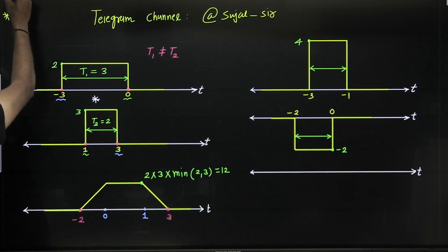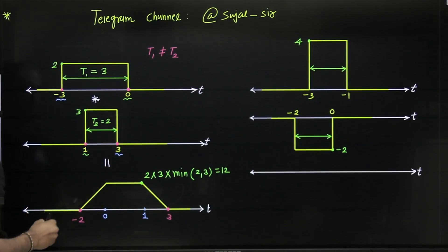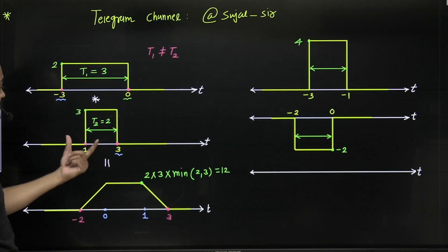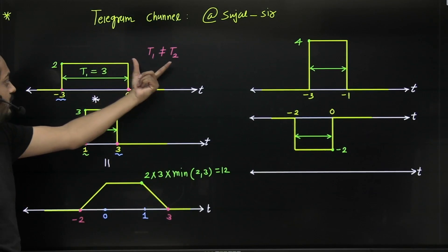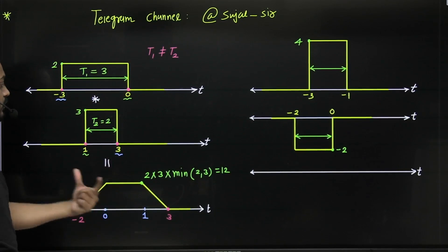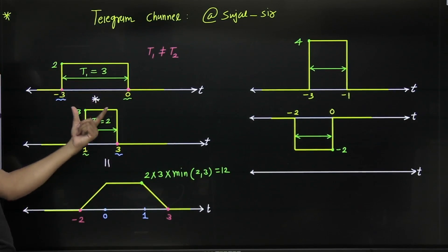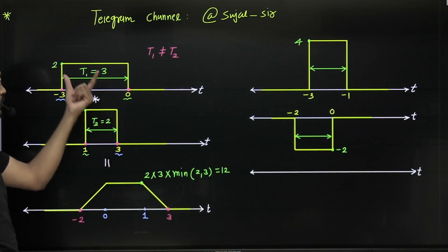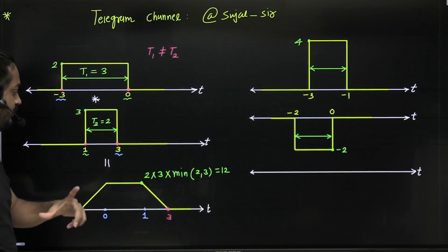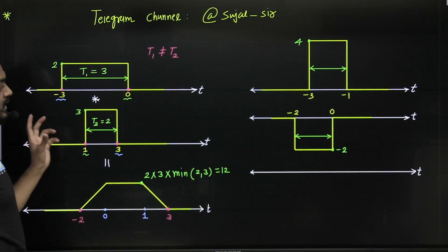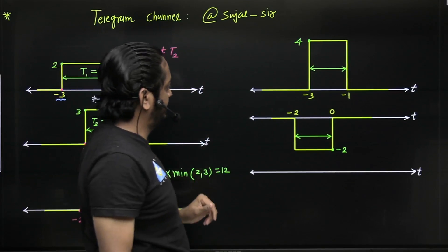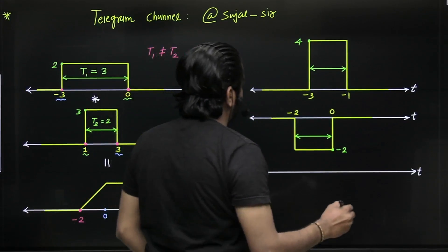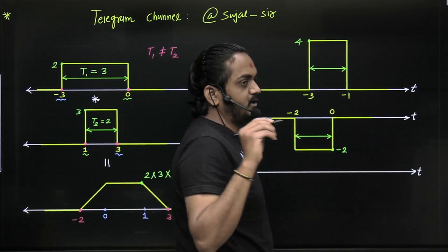So the resultant convolved signal is trapezoidal. To summarize: first check the pulse width — if unequal length pulses, the result is trapezoidal. Both amplitudes positive gives positive resultant; both negative also gives positive amplitude. Now let's take one more question with equal length pulses.